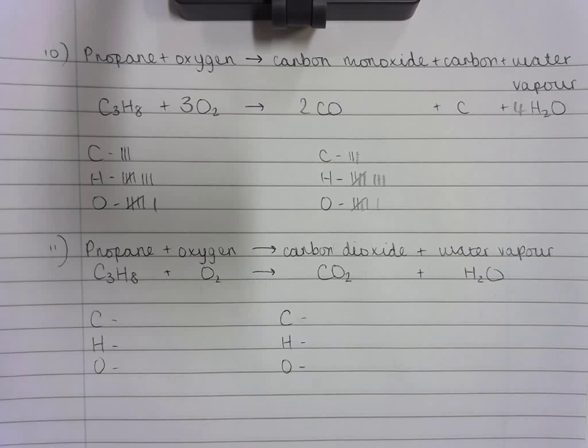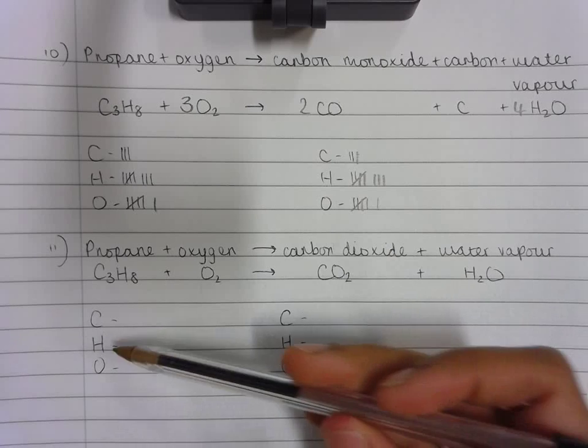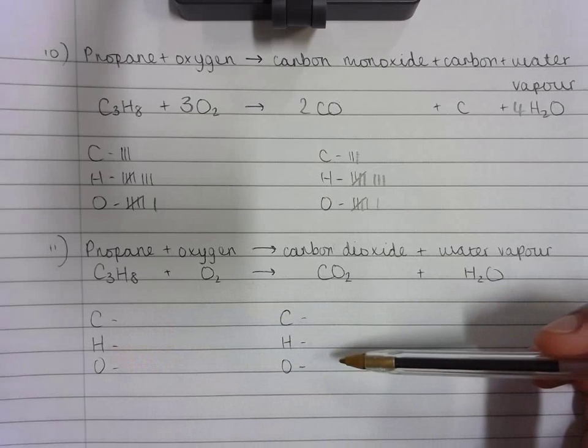This is the balancing chemical equation video number 10. I have completed the first three steps in pen. I have written the word equation, the chemical equation, and written out the chemical symbols for the atoms that react in the reaction on the reactant and the product side of the equation.